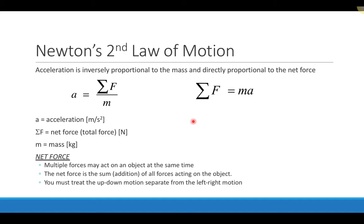When we say net force, we mean there can be multiple forces acting on an object at the same time. The net force is the sum of all these forces, but we have to take direction into account. In a tug of war, people pull in both directions and the object may not move — individual forces act, but the net force or sum may be zero. We also have to treat up-and-down motion separately from left-and-right motion, similar to projectile motion where horizontal and vertical motions are independent.